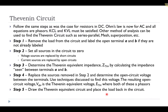We'll go through an example. The first step is to remove the load from the circuit and label the open terminals A and B if they're not already labeled — basically identifying the terminals across which we want the Thévenin equivalent. After labeling, we set all sources in the circuit to zero: voltage sources are replaced by short circuits, similar to the superposition principle, and current sources are replaced by open circuits. We then determine the Thévenin equivalent impedance ZTH by calculating the impedance seen between terminals A and B.